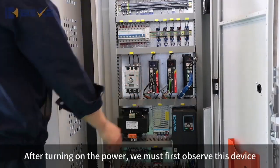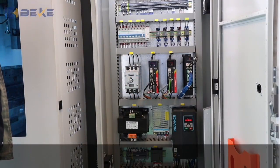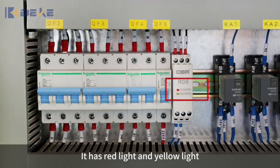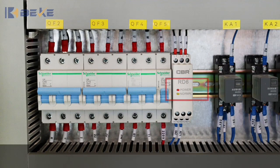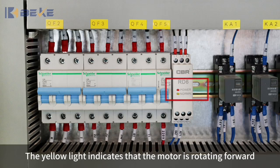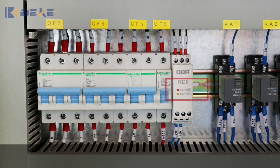After turning on the power, we must first observe this device. It has red light and yellow light. Red light indicates that the power is connected. The yellow light indicates that the motor is rotating forward.